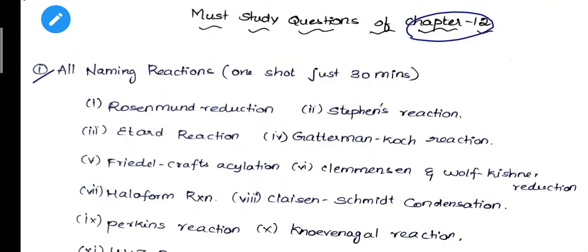One question is all naming reactions. There might be one naming reaction question asked. If you are asked the naming reactions, there are many possibilities — it could be a two-mark, three-mark, or five-mark question. The minimum two to five marks is often the naming reaction. This is compulsory — naming reaction will come.